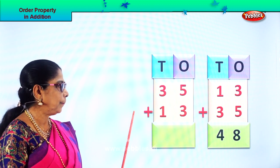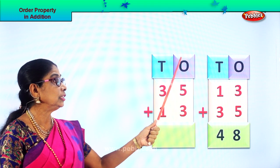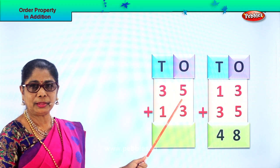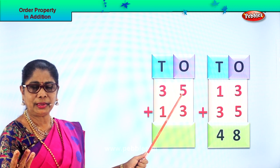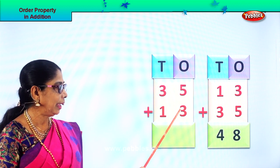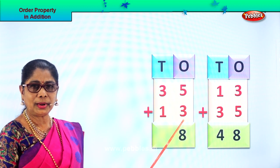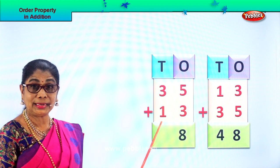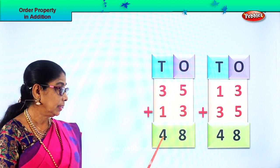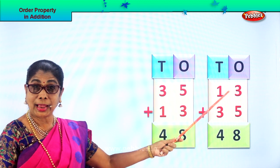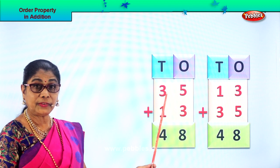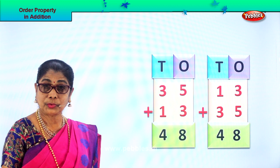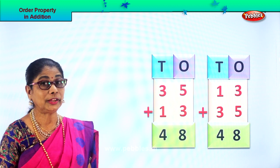Now what is 35 plus 13? Add the ones place: 5 ones plus 3 ones — 5 in the mind, take 3 on your fingers. After 5: 6, 7, 8 ones. Then the tens place: 3 tens plus 1 ten is 4 tens. So whether you add 13 plus 35 or 35 plus 13, your answer is 48. Order property of addition!